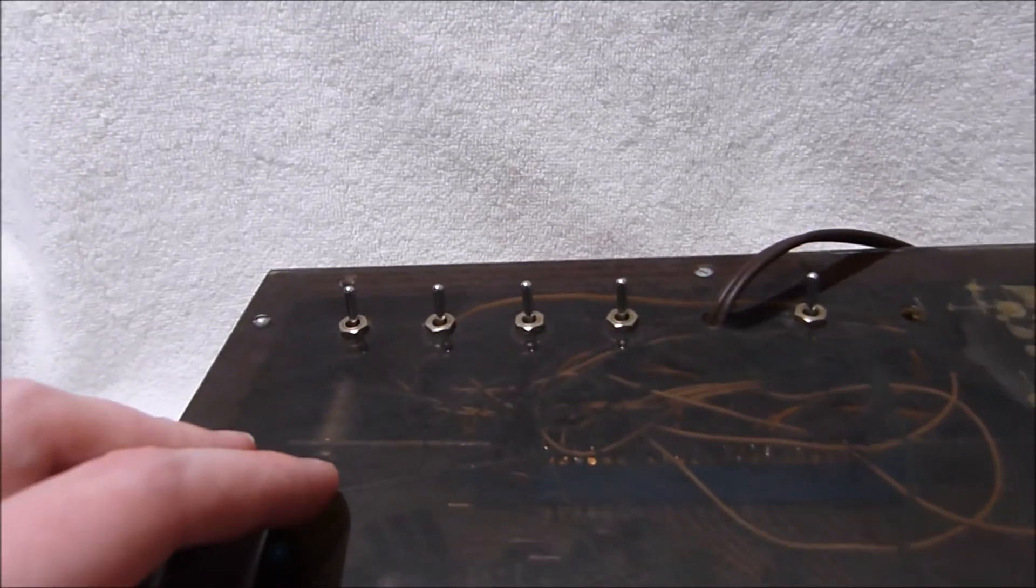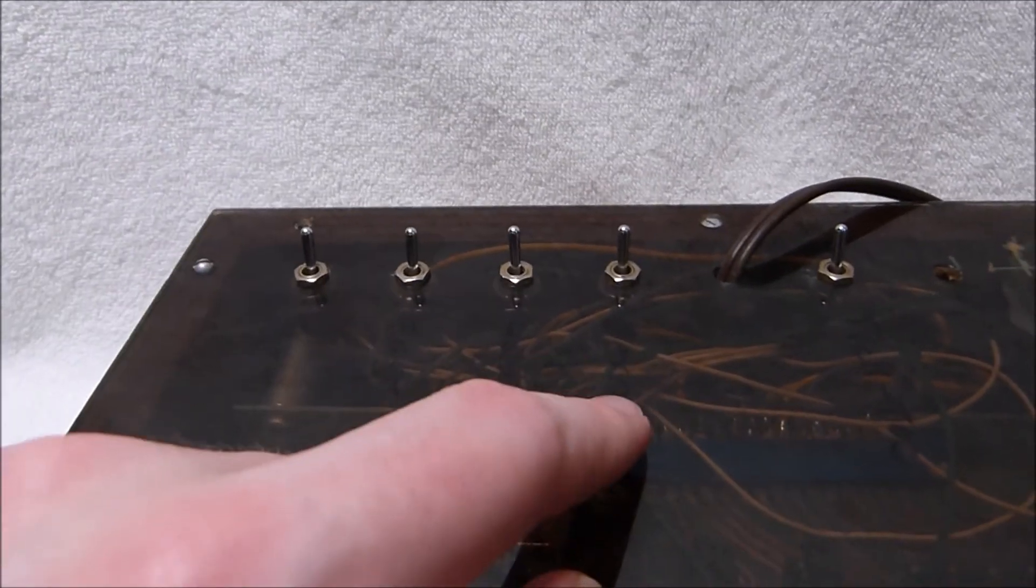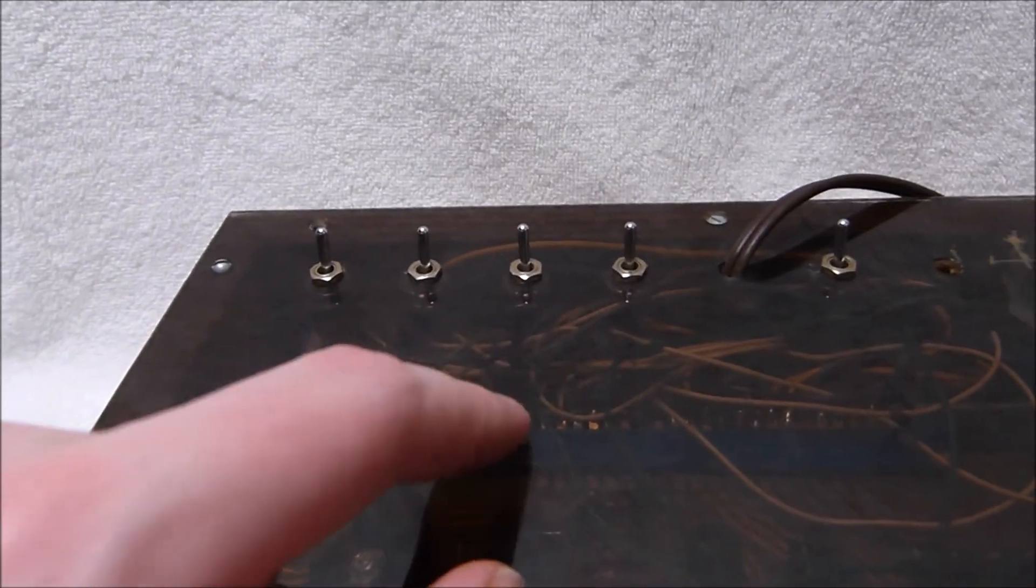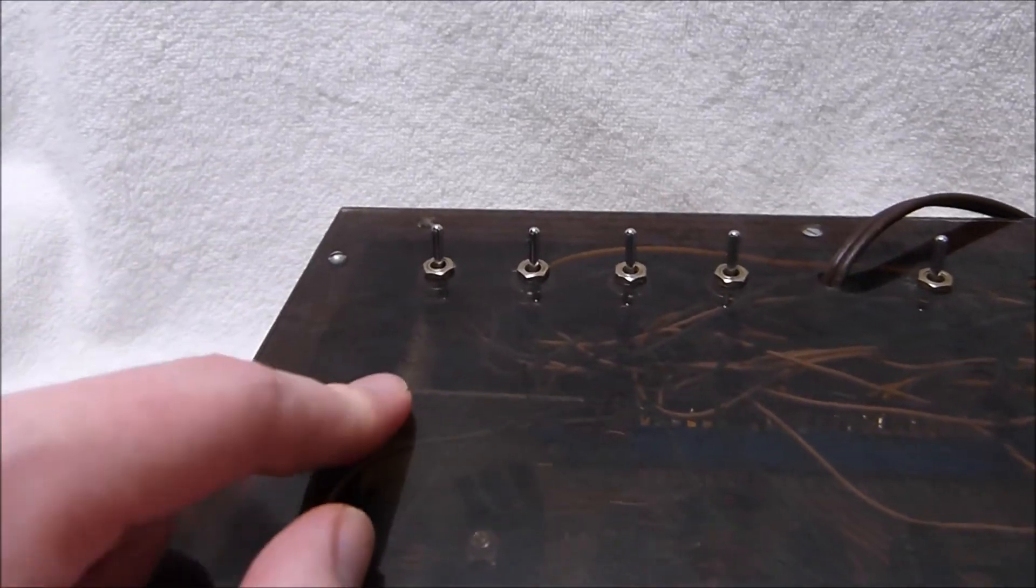Now for the rest of the controls on the back, which are still labeled with the original builder's handwriting. We've got the zero seconds control, we've got the hold slash set control, then the fast set and slow set switches.